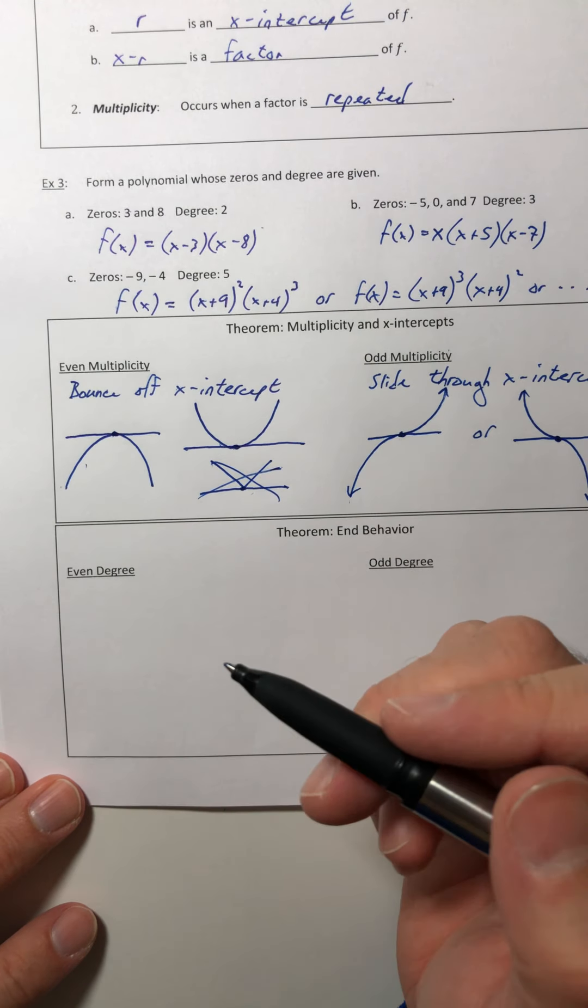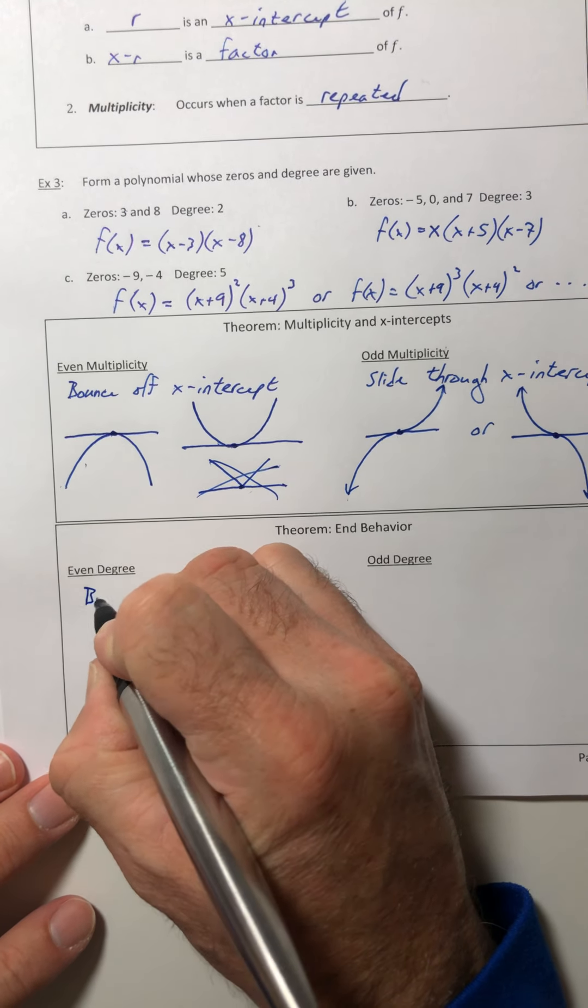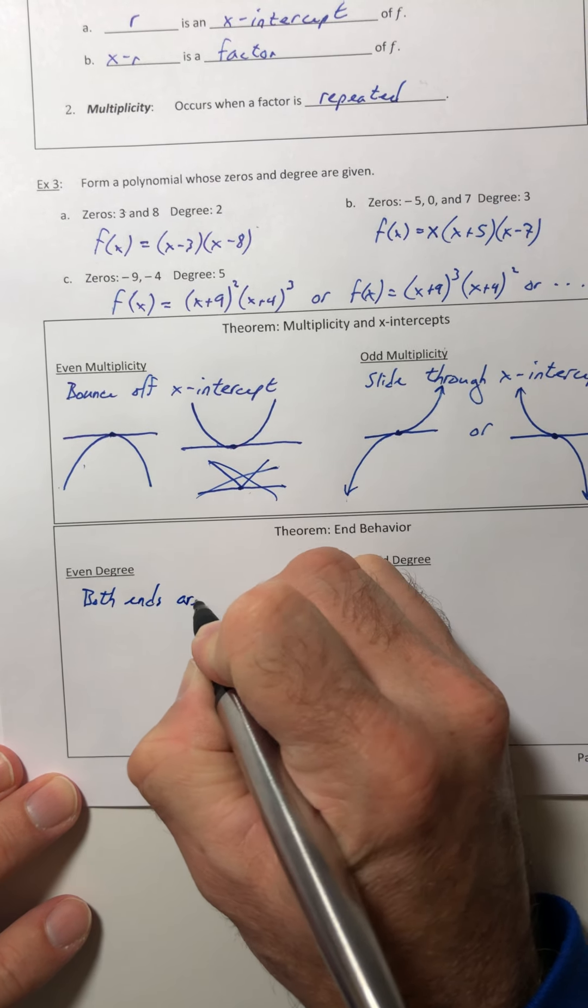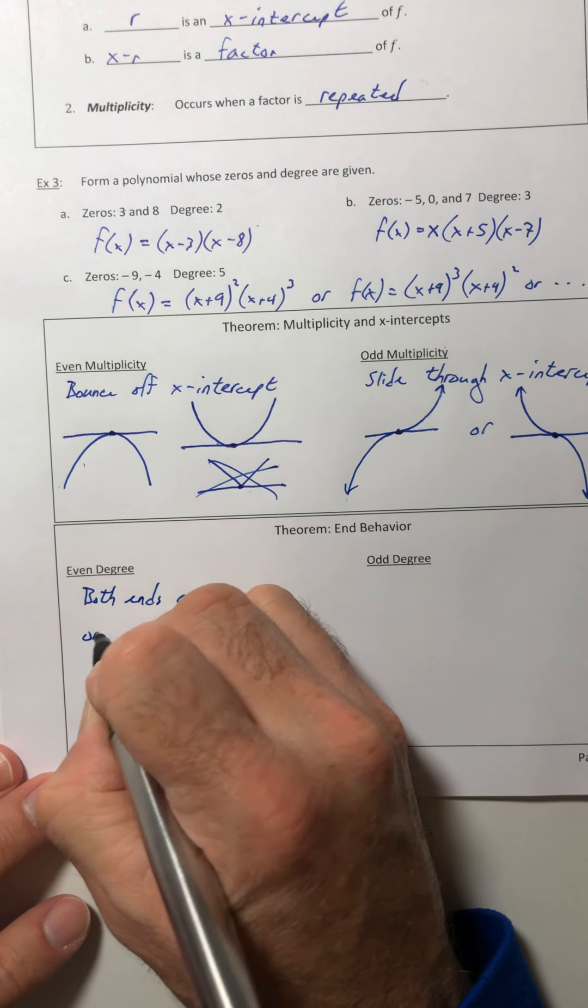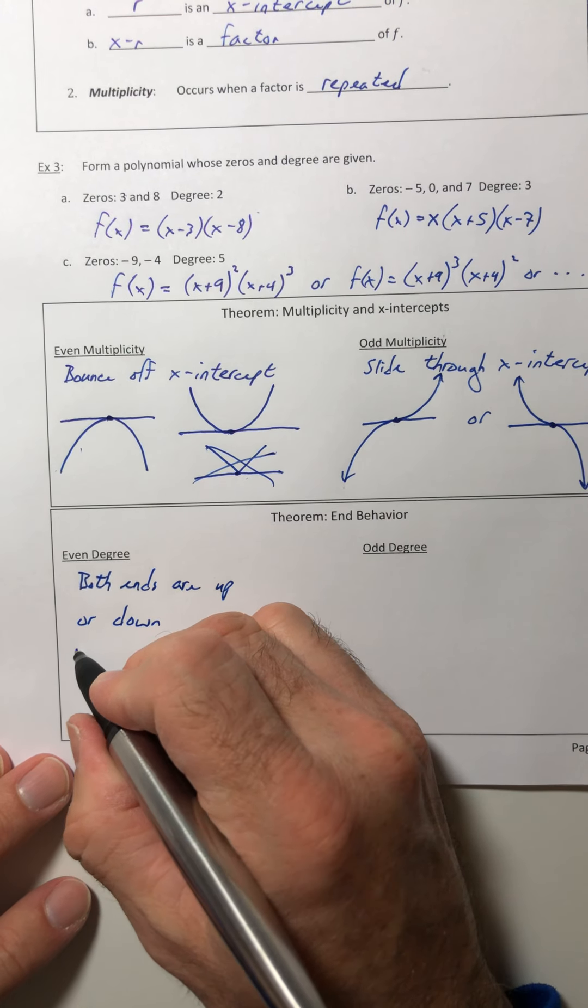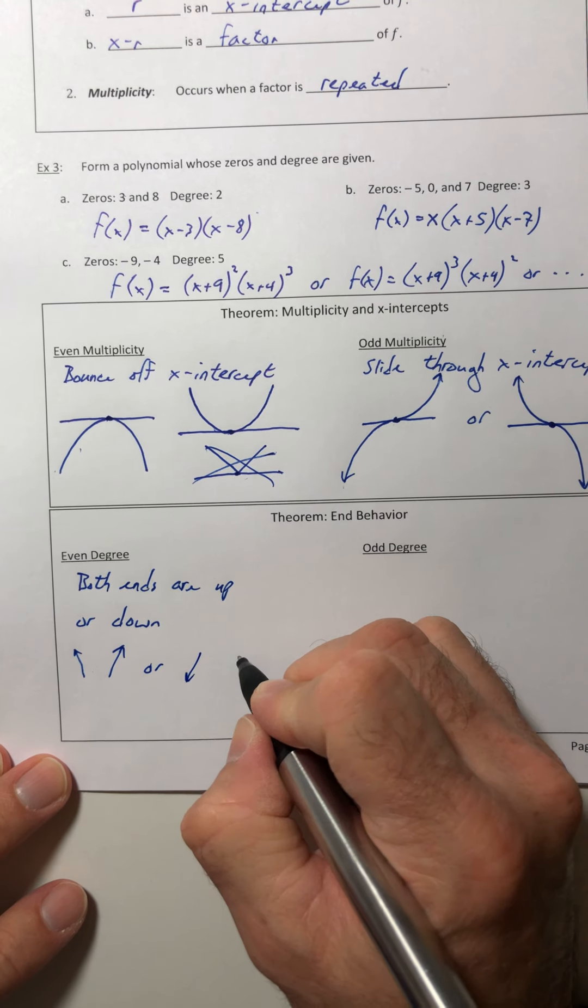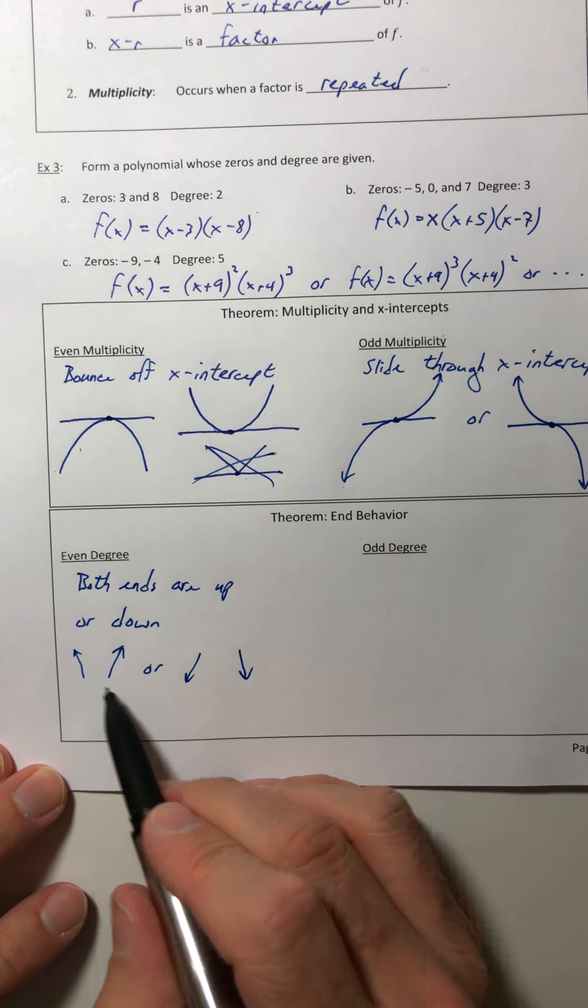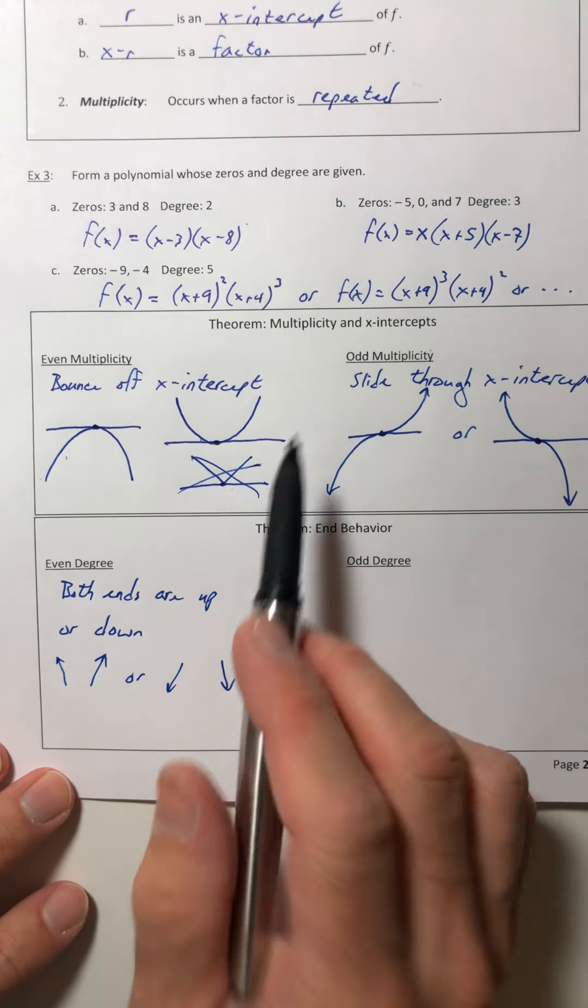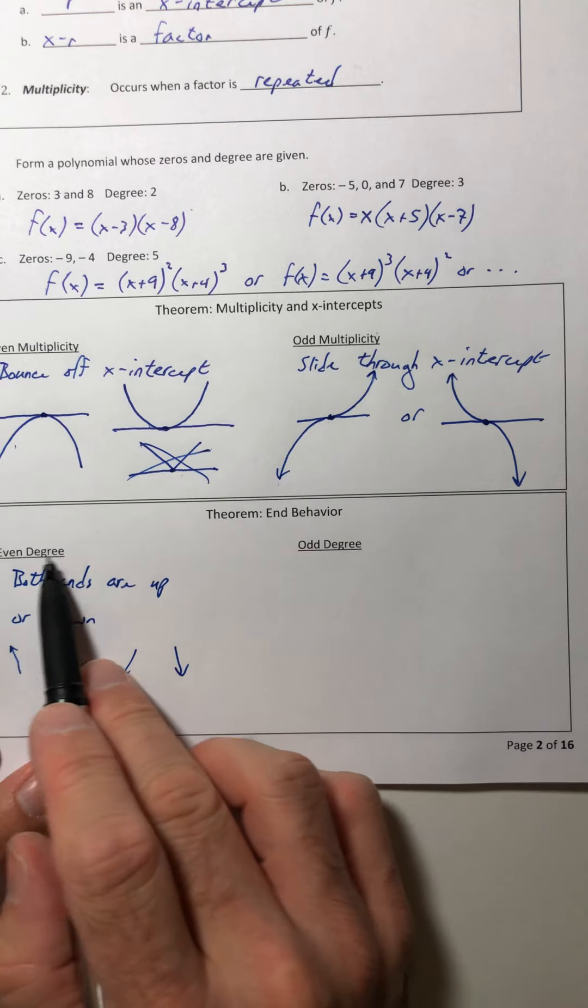So if the degree is even, so two, four, 28, 316, both ends are up or they're both down and it's going to be one of the two. So the ends are going to go both up like this or both of them are going to go down and there's going to be a curve that you'll have to fill in in between them. But then that's where the multiplicity comes in, how many intercepts and so on and so forth, but you'll know what the behavior, the end behavior does just by looking at the degree.